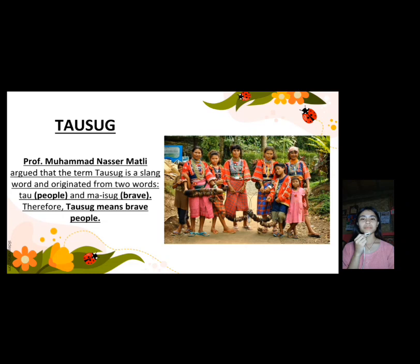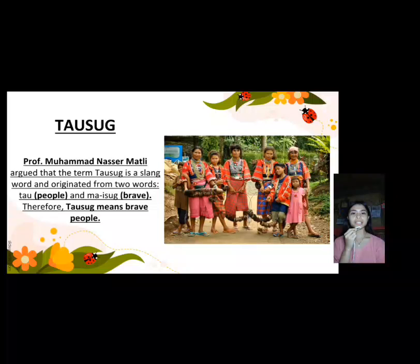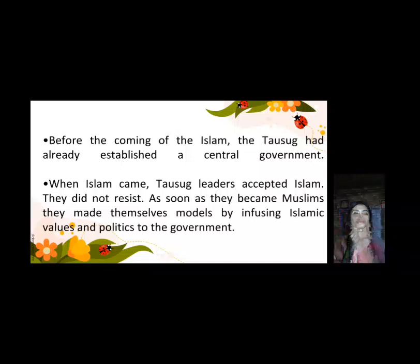The fourth Muslim ethnic group is the Tausug. Professor Muhammad Nasrullah argued that the term Tausug originated from two words: Tao meaning people and Maisug meaning brave, so Tausug means brave people. Before the coming of Islam, the Tausug had already established a central government. When Islam came, Tausug leaders accepted Islam and made themselves models by infusing Islamic values into politics and government.